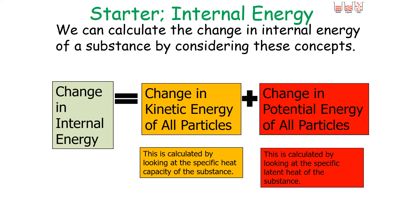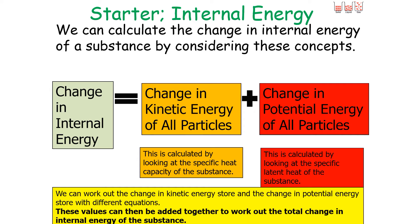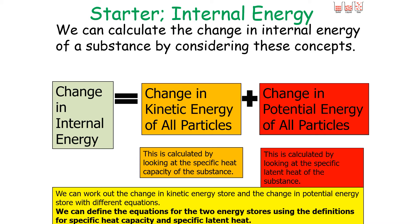When we look at the change in the kinetic energy of the particles, we use the specific heat capacity of the substance. When we look at the change in the potential energy store of the particles, we use the specific latent heat of the substance. We can work out both changes with different equations and then add these values together to find the total energy change in the internal energy of the substance.